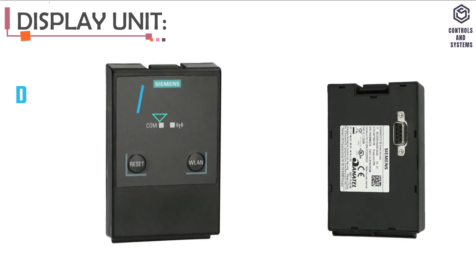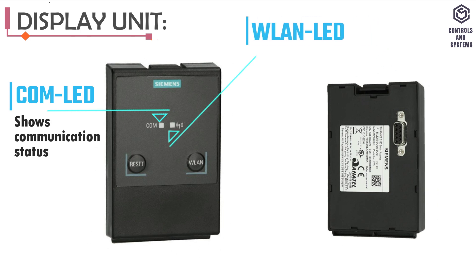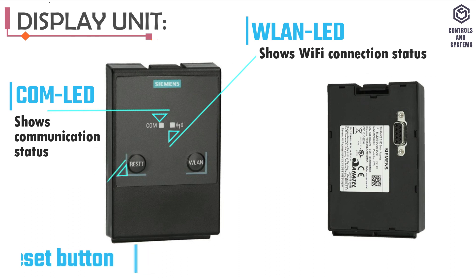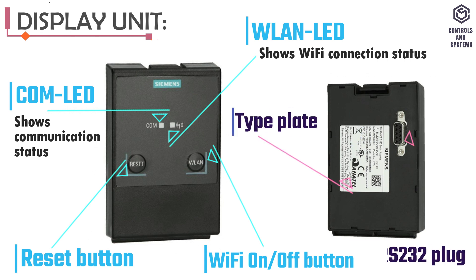Display unit components: the COM LED shows communication status; the WLAN LED shows Wi-Fi connection status; there is a reset button; a Wi-Fi on/off button; a type plate; and an RS-232 plug.